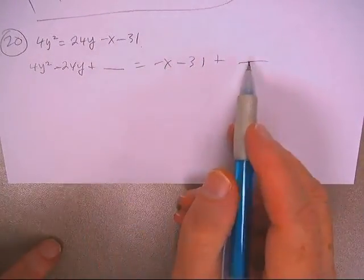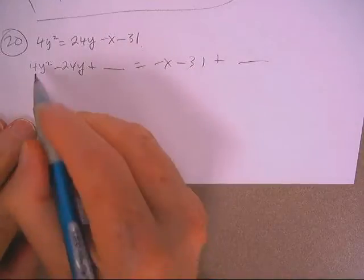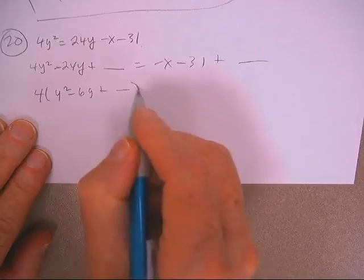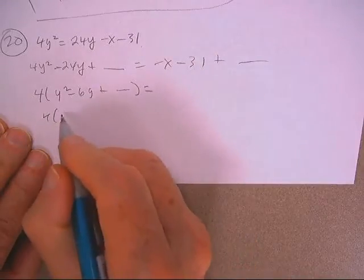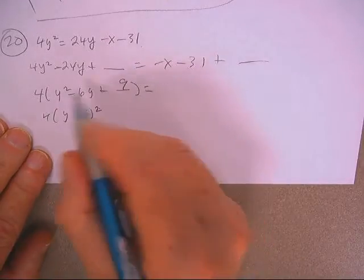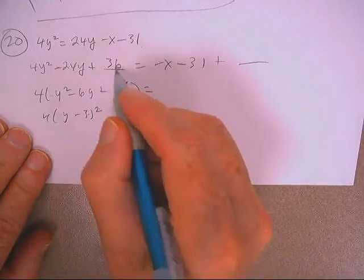Whatever I add there, I'll go ahead and add it here. I'll divide the 4 out, y squared minus 6y plus a blank. Half of 6 is 3, 3 squared is 9, 4 times 9, 36.